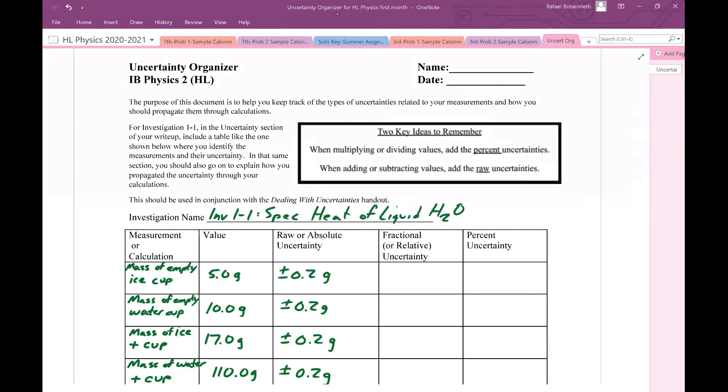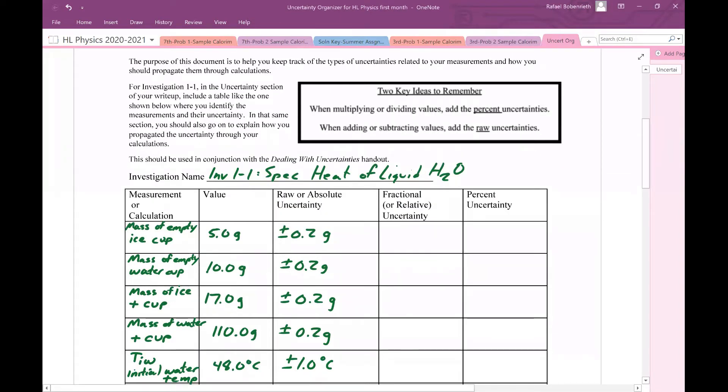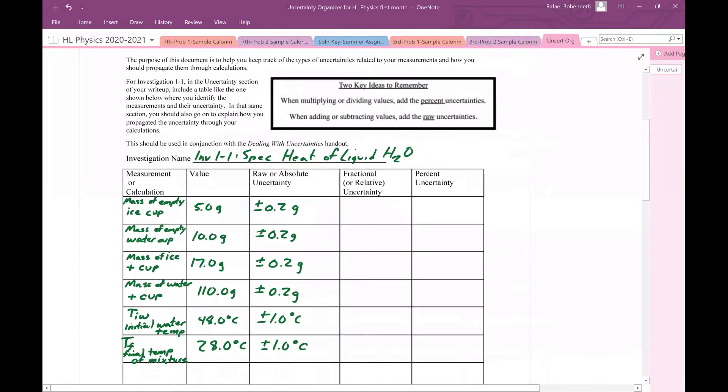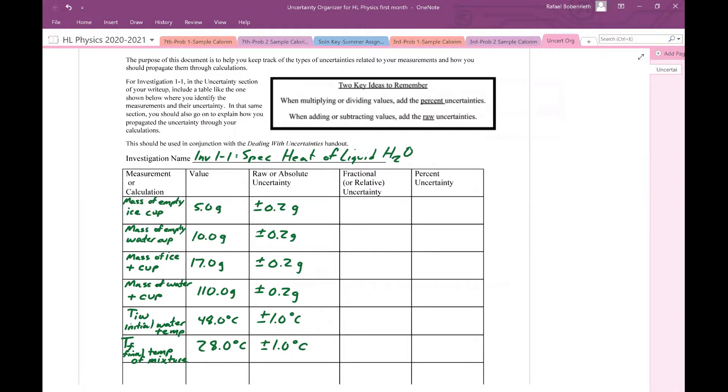For this specific video, we're going to talk about how it applies to Investigation 1-1, specific heat capacity of liquid water, but these ideas apply to just about any uncertainty situation, so you can generalize this. If you're doing this for Investigation 1-1 in the HL Physics class, I recommend you pause this video and copy down your data set for the investigation, which is going to be different than the data set I have here.